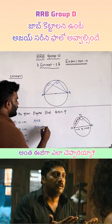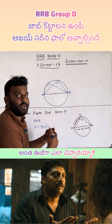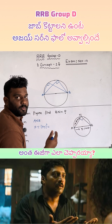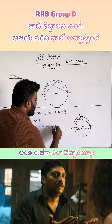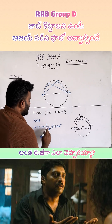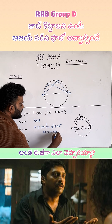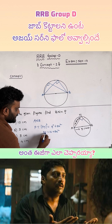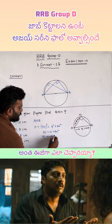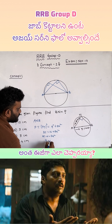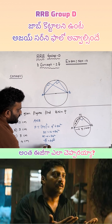By the Pythagoras theorem for right angle triangle ANB: BN squared equals the sum of the squares of the remaining two sides. So, 5 squared equals 4 squared plus BN squared. That gives 25 equals 16 plus BN squared. So BN squared equals 25 minus 16 equals 9. Taking the square root, BN equals 3. Option B is the right answer.